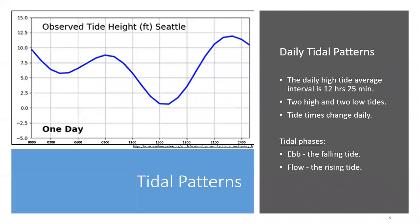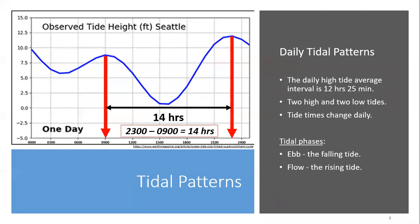Daily Tidal Patterns. Daily, the average interval between high tides is 12 hours, 25 minutes. However, this is a global average and varies daily. For example, as shown here in the daily tidal chart for Seattle, Washington, we can measure the high tide interval over the course of a day. First, let's identify the high tides, then calculate the time difference between them. This would be the difference between 2300 hours or 11 p.m. and 900 hours or 9 a.m. The high tide interval is approximately 14 hours. With a global average high tide of 12 hours and 25 minutes, this example illustrates how tide intervals change in both time and location each day.